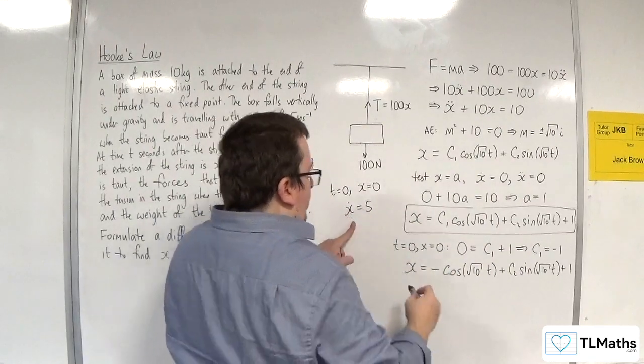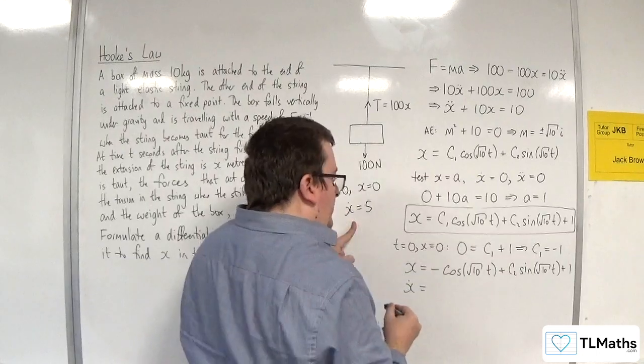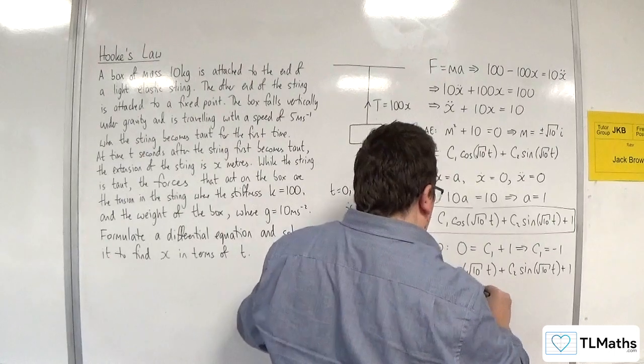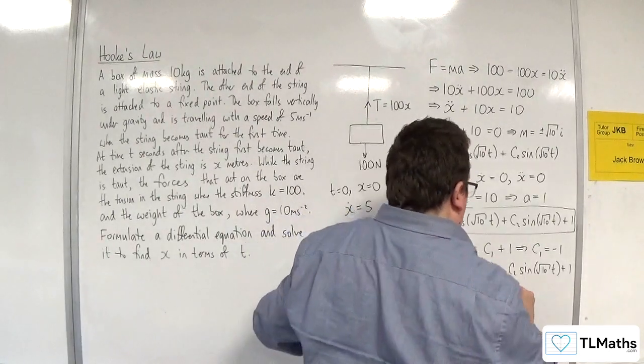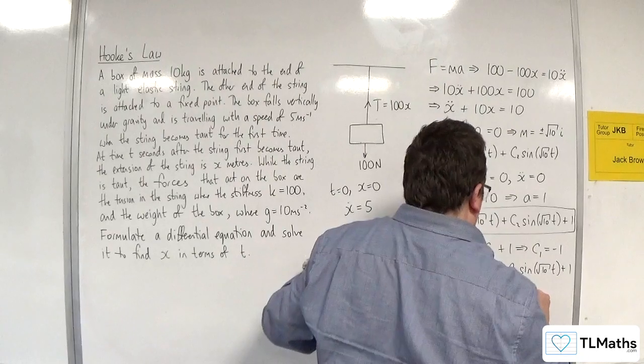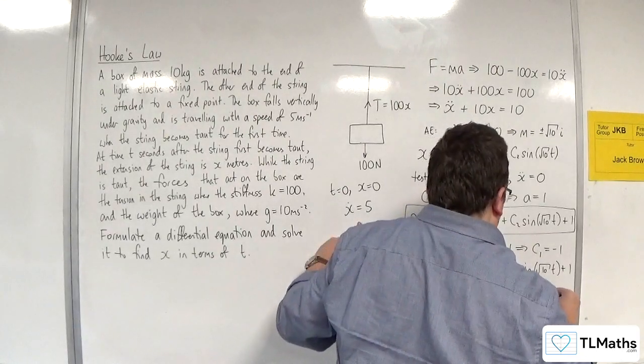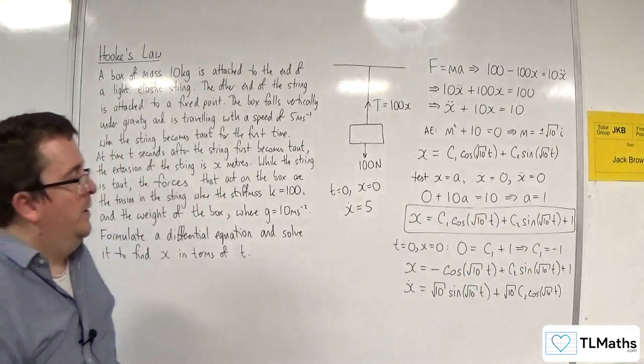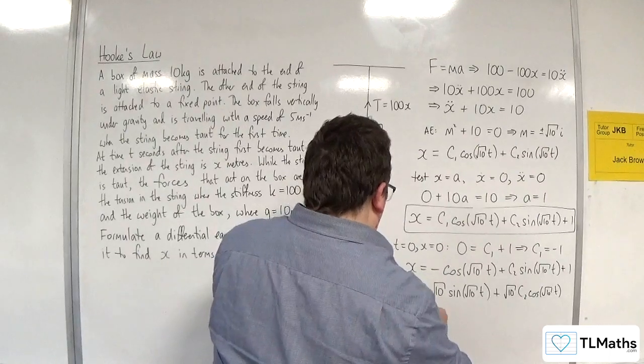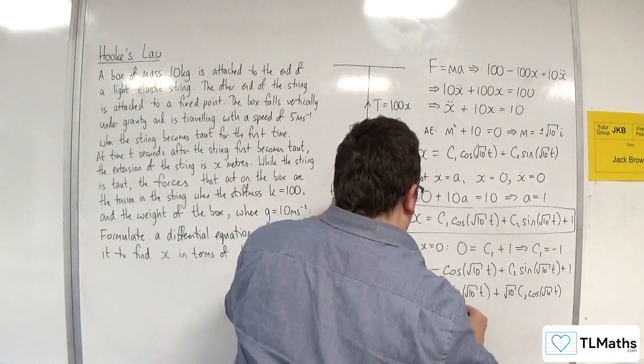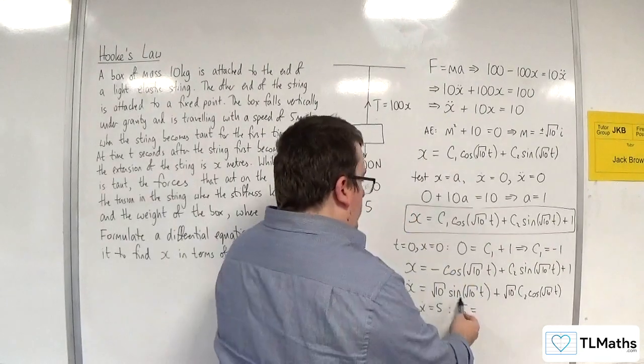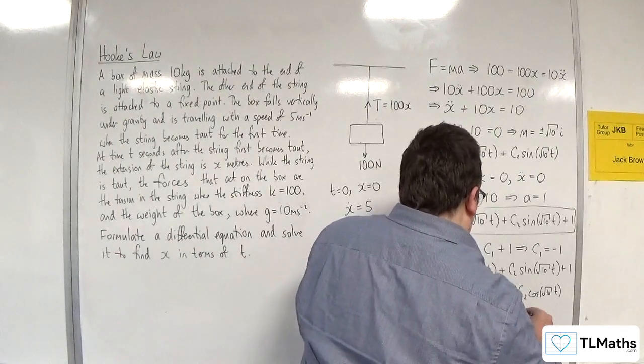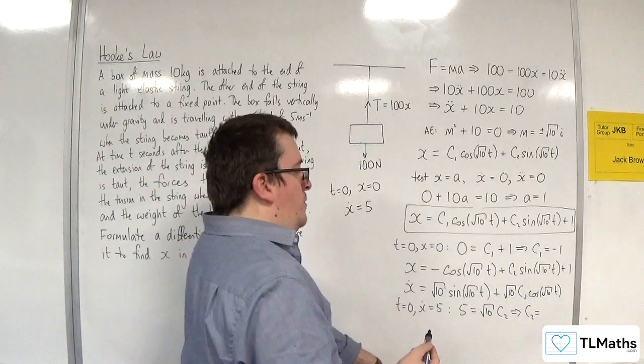Now I'm going to have to differentiate it to use this second bit of information. So x dot differentiating would be root 10 sine of root 10t plus root 10c2 cosine of root 10t, and the one differentiates to 0. So when t is 0, x dot is 5. So we get 5 is equal to, sine of 0 is 0, we're going to get root 10 times c2. So c2 is going to be 5 over root 10.